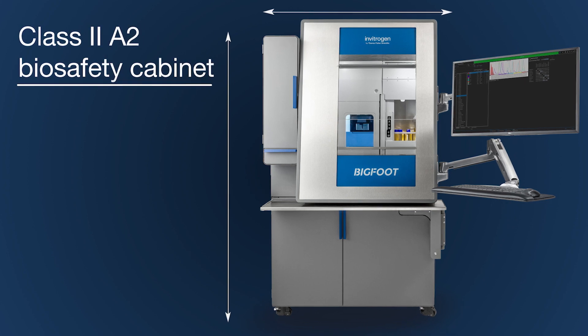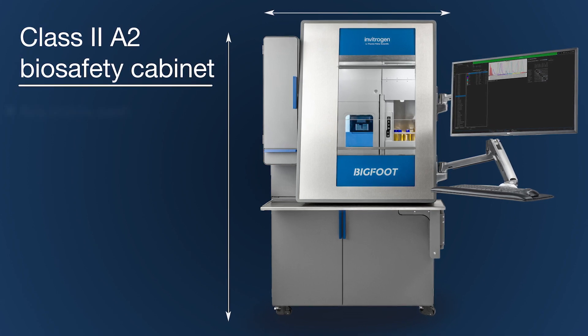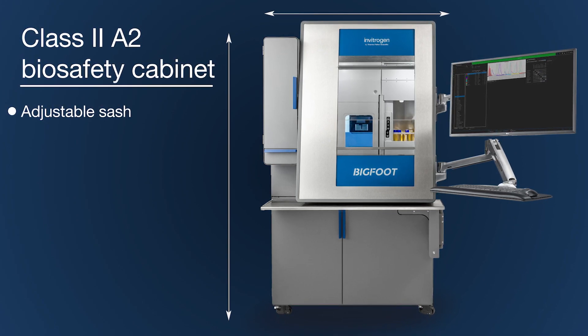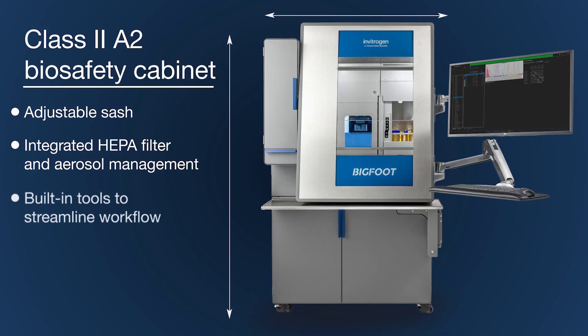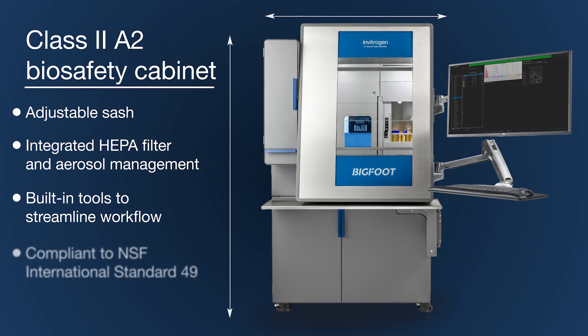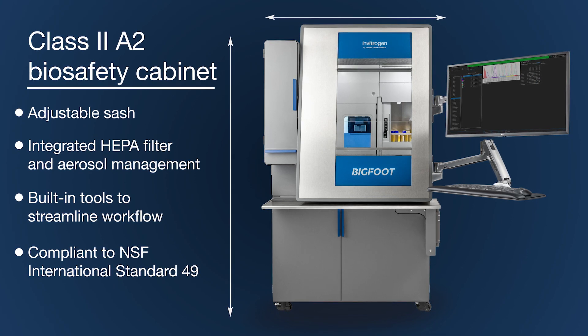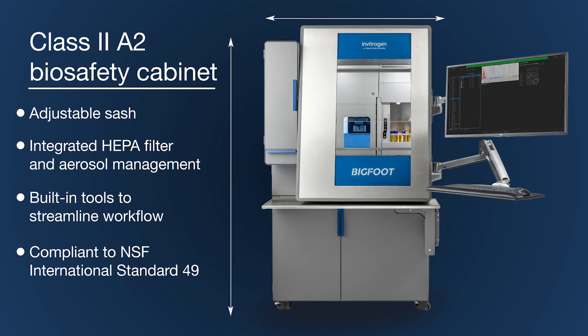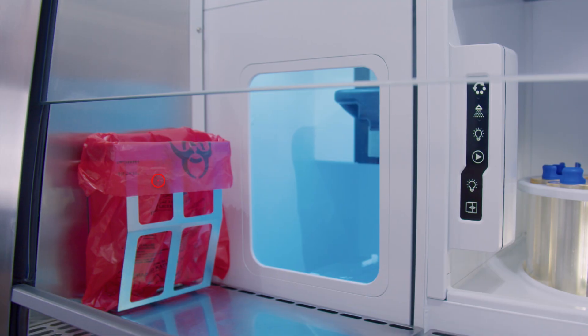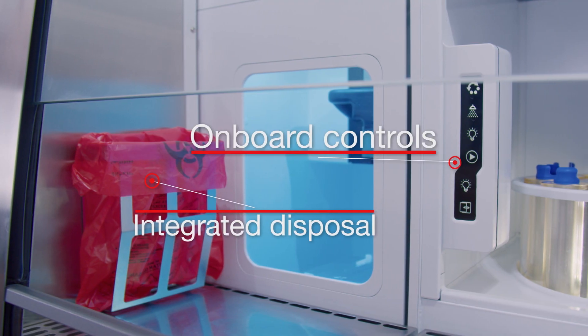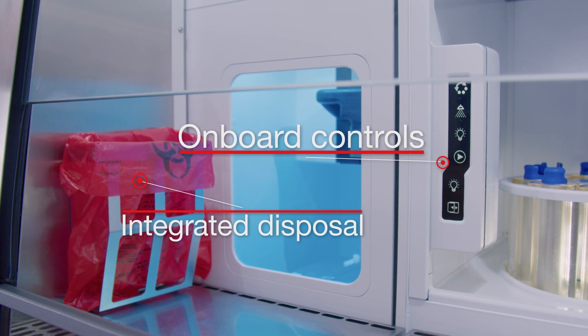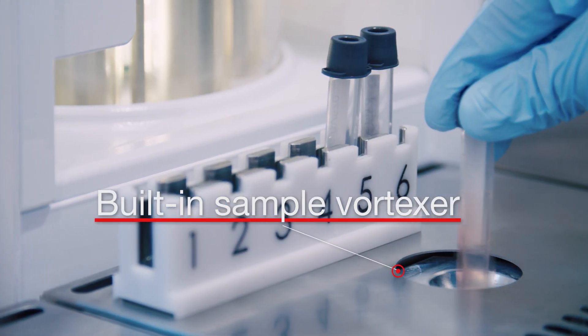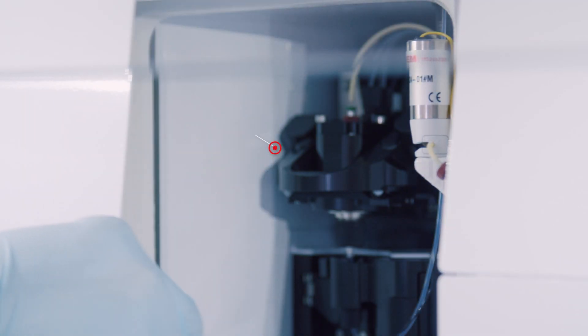An integrated Class II biocontainment cabinet helps ensure the safety of users and samples. The system has been verified to be functionally equivalent to the personnel and product protection standards for a Class II Type A2 biosafety cabinet per International Standard 49. The Bigfoot Spectral Cell Sorter Class II Biocontainment cabinet provides safety and protection without compromising high-parameter sorter performance or limiting serviceability.